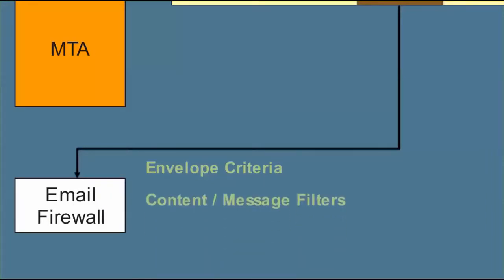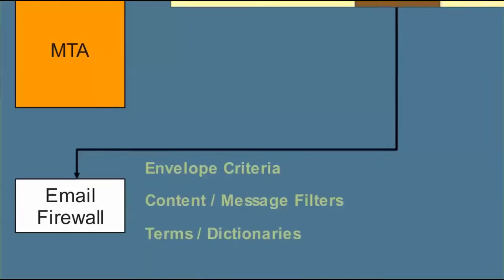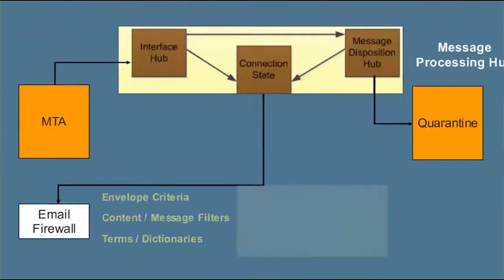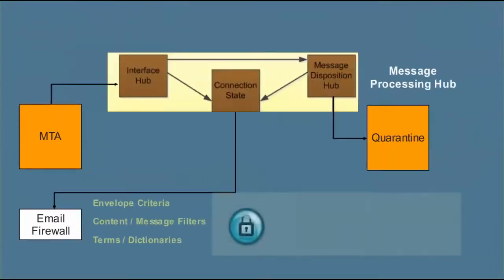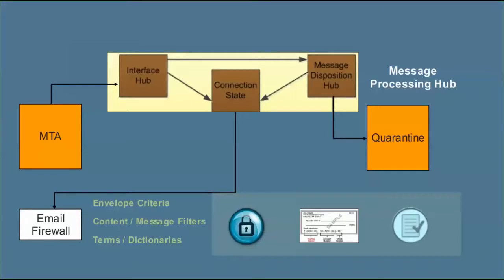Content filters can act on messages based on their content, like adult language and attachments. Message attribute filters can act on various message attributes, like attachments. And finally, terms in dictionaries include the identification of credit card numbers, ABA routing numbers, HIPAA, and other sensitive information. You can also create specialized dictionaries containing terms specific to your company.